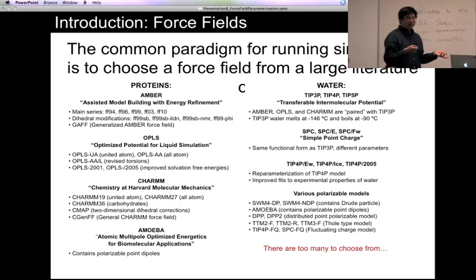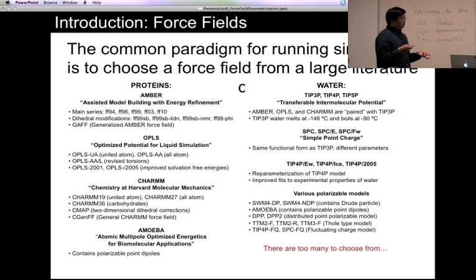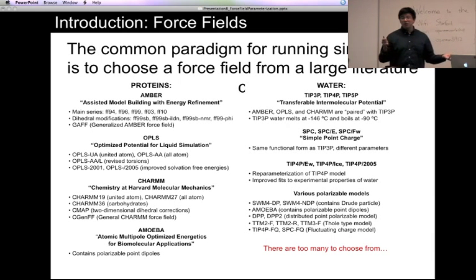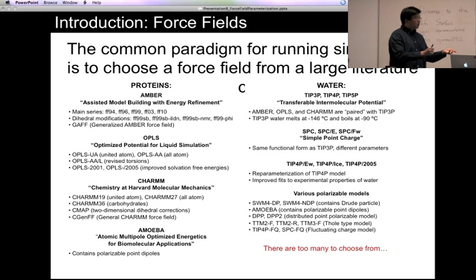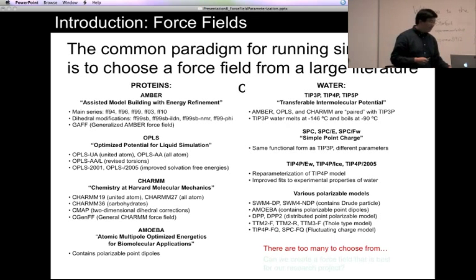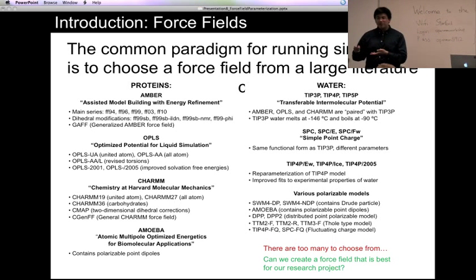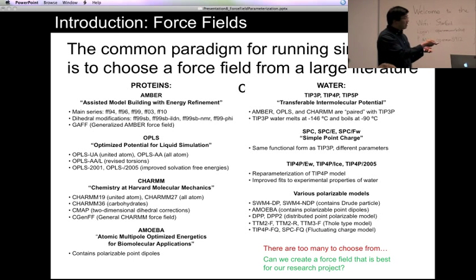So there are way too many force fields to choose from. This is probably becoming a headache for a lot of people doing protein simulations. If your result doesn't agree with experiment, the choice of force field is a possible source of error. And it might lead some people to ask: can we create a force field that is best for our particular research project?